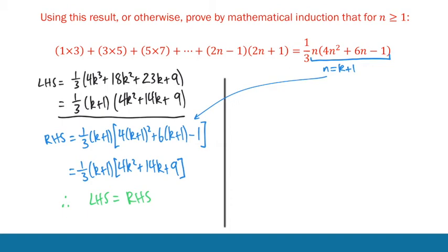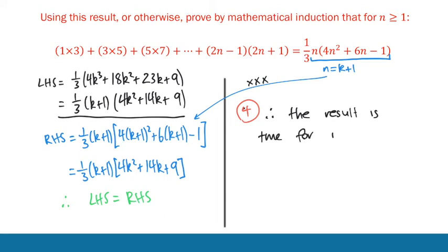In an exam, you might want to set that up by saying what the right-hand side should equal, then show left equals right. Don't use arrows in the actual exam — that's not good practice. Step 4 is always just to conclude. In exam scenarios, it's totally fine to say: 'Therefore the result is true for n greater than or equal to 1 by induction.' It's really important you put this concluding statement at the end — you won't get full marks without it.